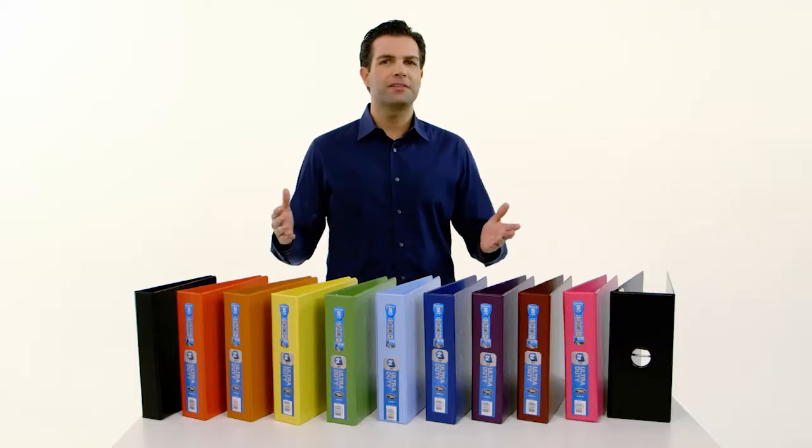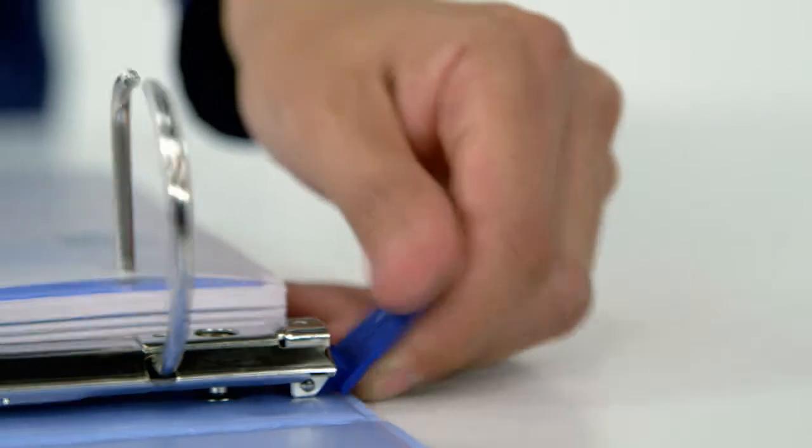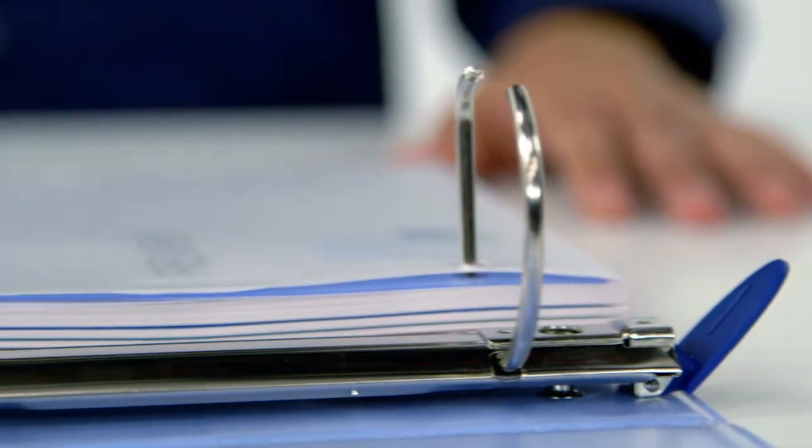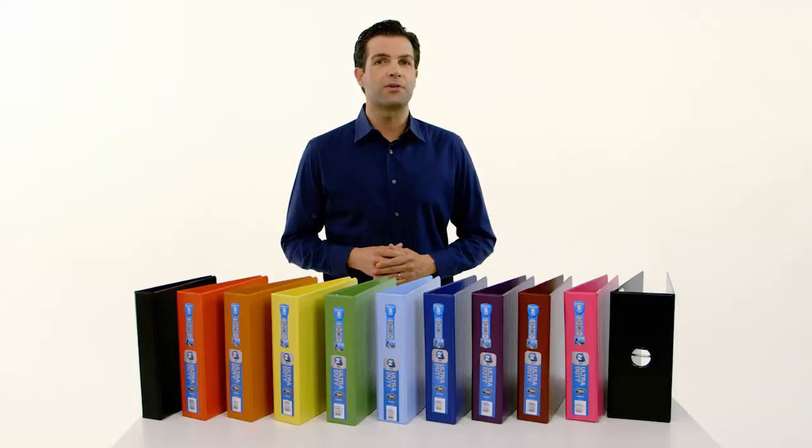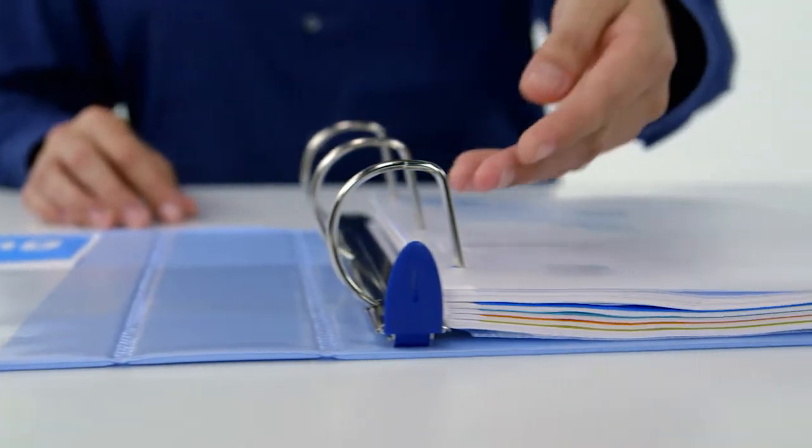Quickly update the contents of your binder with a single touch. One trigger opens the never-gap rings that lock and prevent papers from accidentally coming loose, while the D rings hold up 25% more paper than traditional round ring binders in the same amount of space.